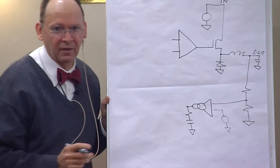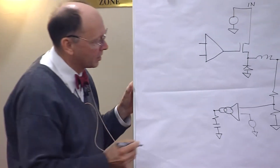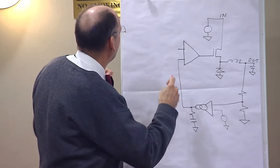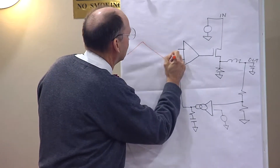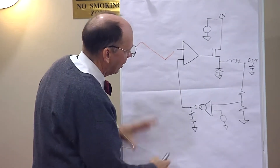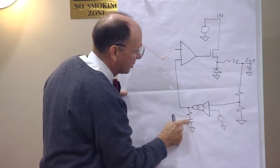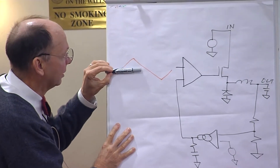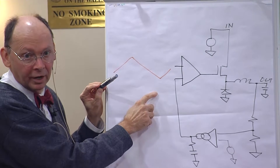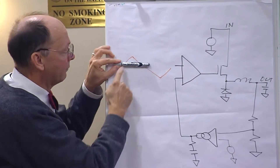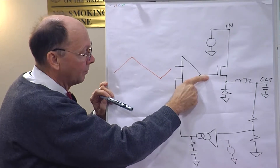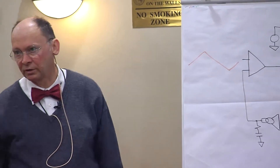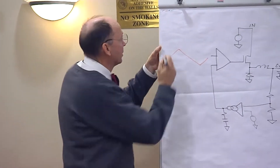That amplified error voltage goes into one side of the comparator. On the other side I put a high-frequency triangular wave. These three elements are chosen such that the error voltage changes very slowly compared to the high-frequency triangular wave. The comparator then compares a DC level with a triangular wave to make a duty cycle, adjusted to get the right output voltage. That's the basic invention of a switch-mode power supply - the method used in the 1970s.